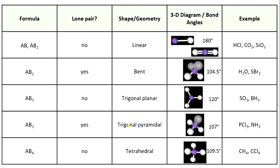The last shape is tetrahedral. 'Tetra' means four, so a tetrahedral molecule always has four outside atoms. A tetrahedral does not have lone pairs and has bond angles of 109.5 degrees.